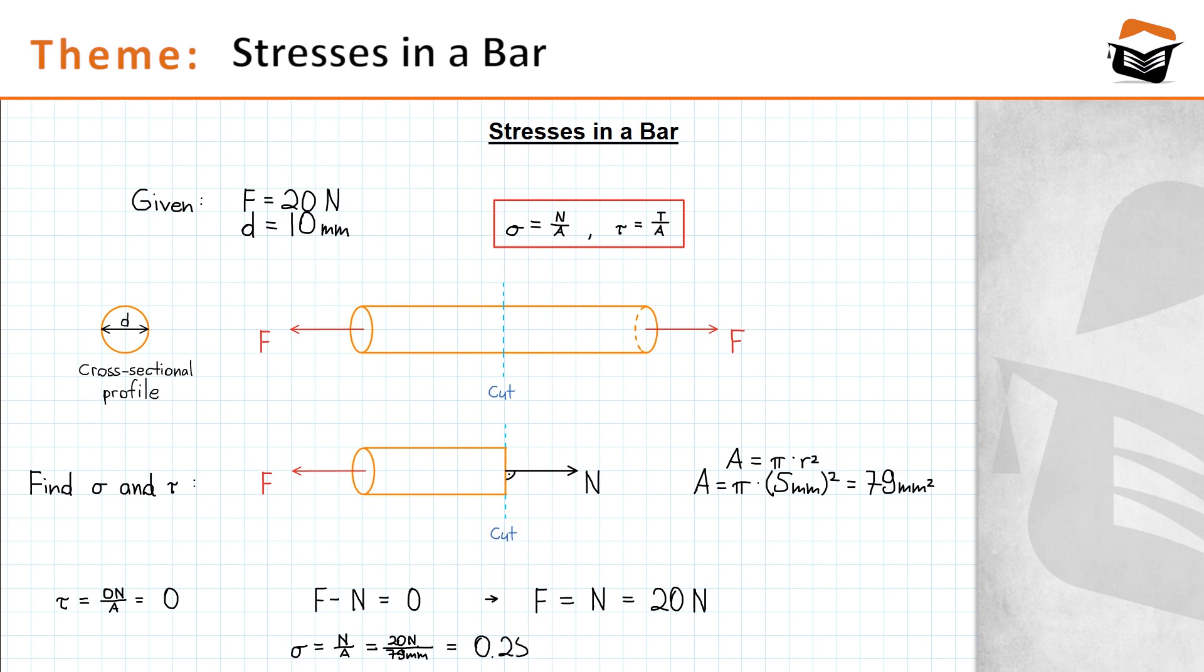0.25 Newton per square millimeter. So the normal stress that we have inside the bar is 0.25 Newton per square millimeter.